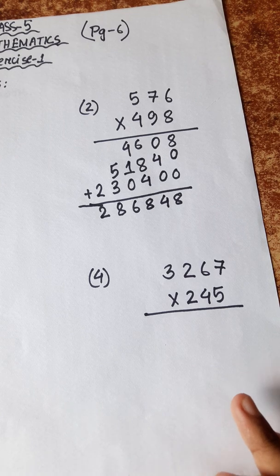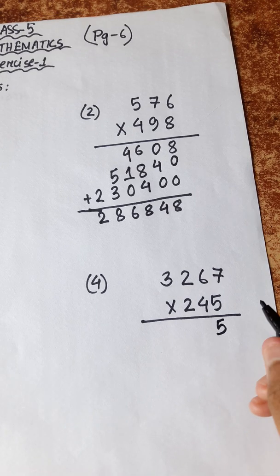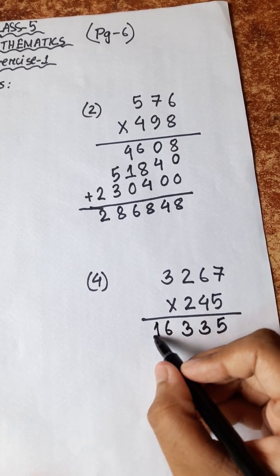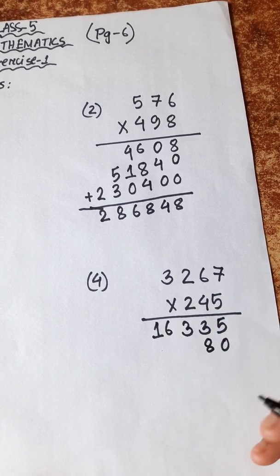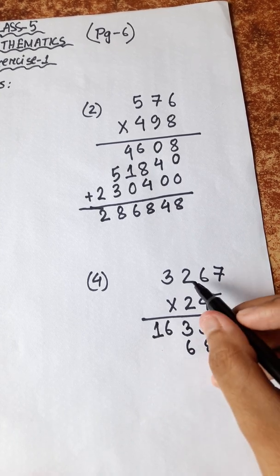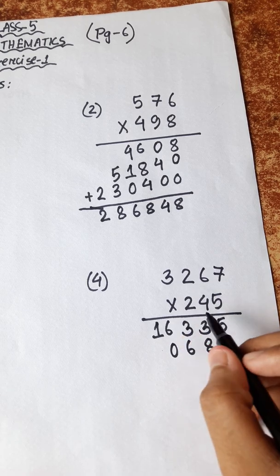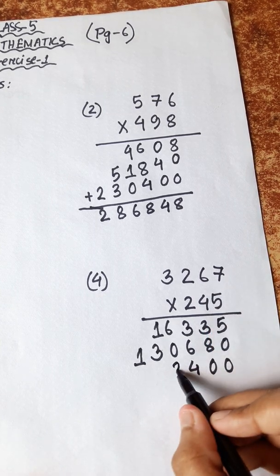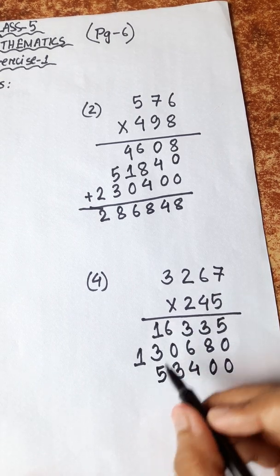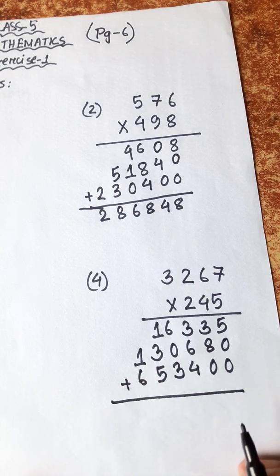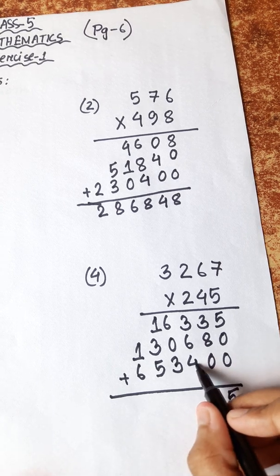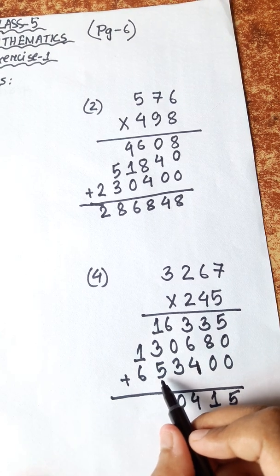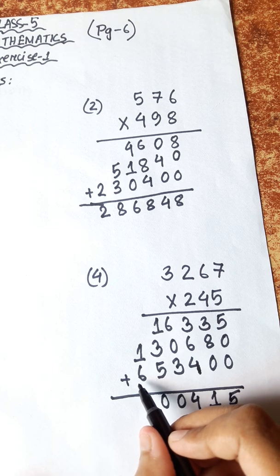Problem Number 4: 32670 × 245. 7 5s are 35, carry 3. 5 6s are 30 plus 3 is 33, carry 3. 5 2s are 8. Steps continue: 9, 10, carry 1. 4 3s are 12 plus 1 is 13. Then: 7 2 0s are 14, carry 1. 6 2 0s are 12 plus 1 is 13, carry 1. 2 2 0s are 4 plus 1 is 5. Result: 8 plus 3 is 11, 4 plus 1 is 5, 6 plus 11 plus 3 is 14, carry 1. Final steps: 3 plus 1 is 4, 6 plus 4 is 10, 5 plus 1 is 6, 6 plus 3 is 9 plus 1 is 10.